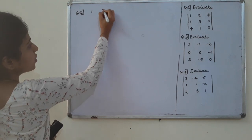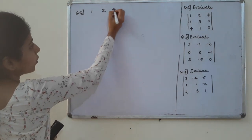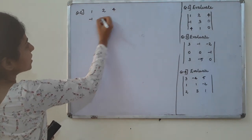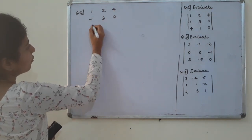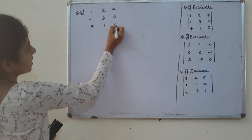Question number 2: the matrix entries are 1, 2, 4, minus 1, 3, 0, 4, 1, 0.